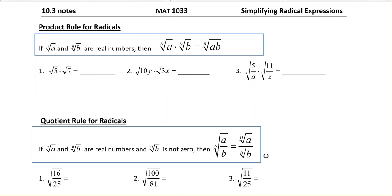So right now, this first rule they give us, the product rule, if n radical a and n radical b are real numbers, then n radical a times n radical b is n radical ab.